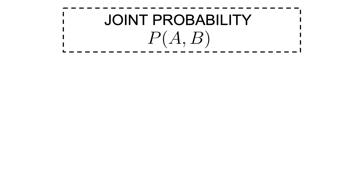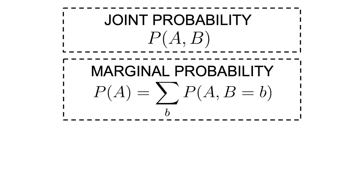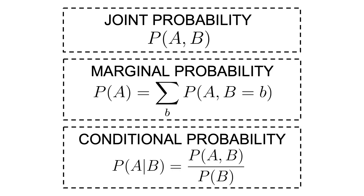So, to recap: first, we have the joint probability, which represents the probability of two events happening at the same time. Second, we have the marginal probability of an event, which outlines the probability of that event happening independent of all other events, and is obtained by marginalizing all other events. And finally, we have the conditional probability, which represents the chance of an event happening given that another event has already happened, and it's obtained by dividing the joint probability by the probability of the second event. And here we have the definition of all three types of probabilities and how they are linked together.